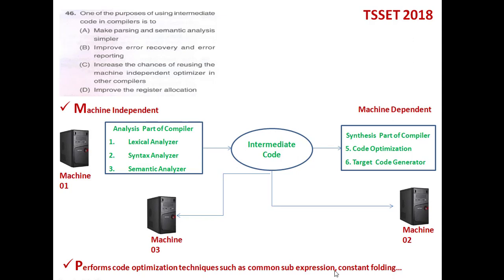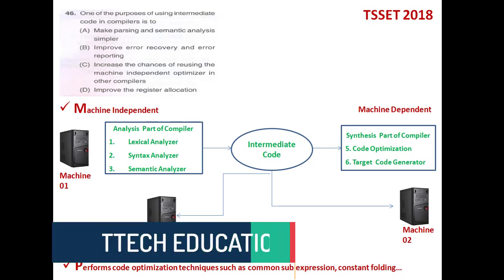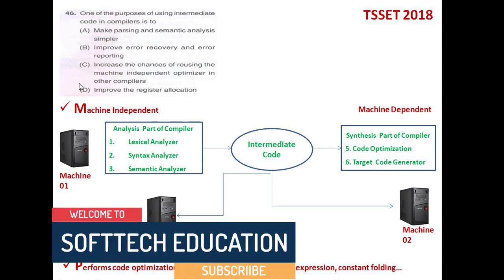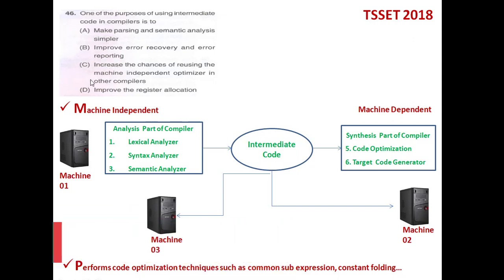Another use of the IR code is that it enables code optimization techniques, such as common sub-expression elimination and constant folding. These optimization techniques can be applied only on the IR code — for example, reducing lines of code or removing redundant code. So among the four options, option C is the right one: it increases the chances of reusing the machine-independent optimizer in other compilers.